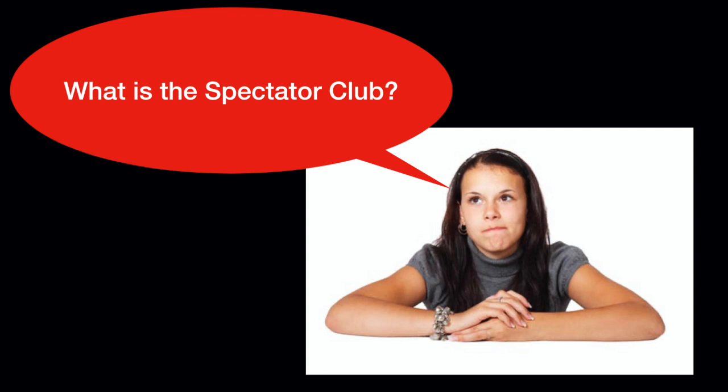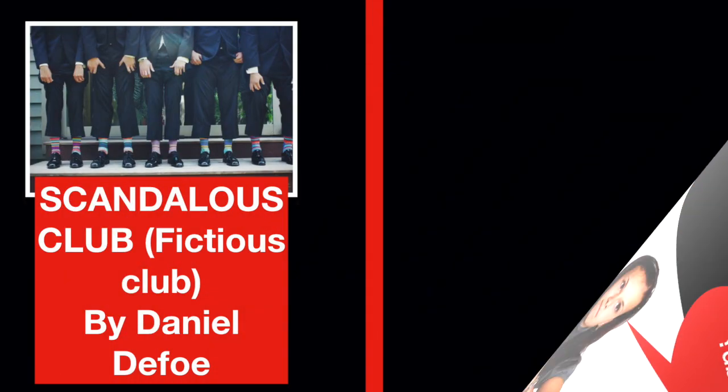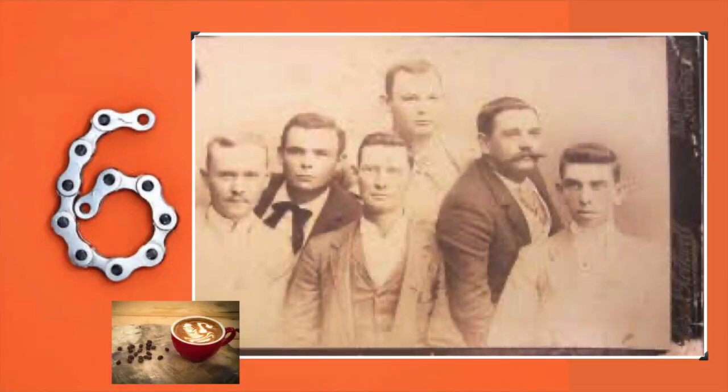The first question we need to understand is: what is The Spectator Club? Just as Daniel Defoe in his periodical The Review had a fictitious club called The Scandalous Club, similarly in The Spectator, Richard Steele and Addison came up with a fictitious club called The Spectator Club. In this club there were altogether six members described in this essay.